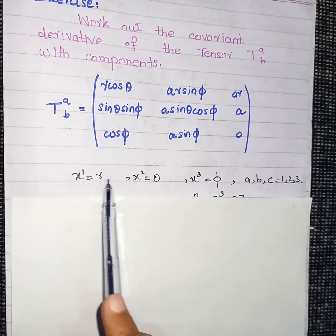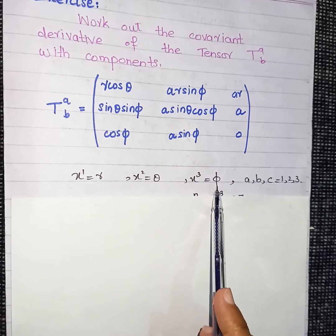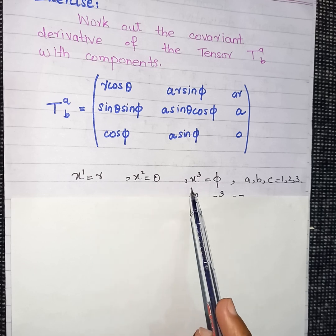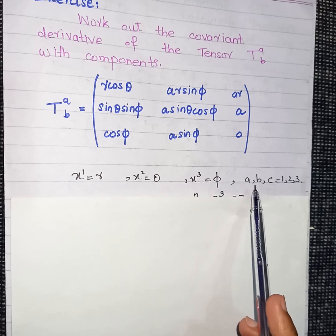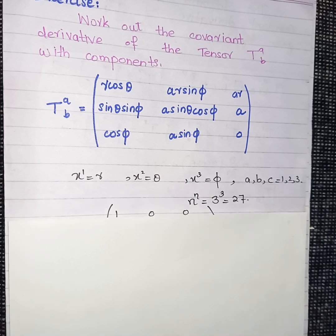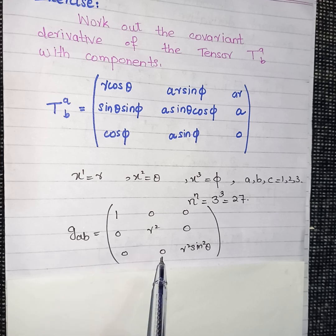Here x1 = r, x2 = theta, and x3 = phi, because we are working in spherical polar coordinates. The indices a, b, and c vary from one to three since we have a three-dimensional space, giving a total of 27 components for the covariant derivative of the given tensor.